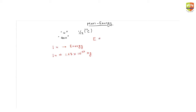Since we are dealing with subatomic particles, we need to find energy in electron volts. To convert, just divide the energy in joules by the charge of an electron and you will get the answer in electron volts.